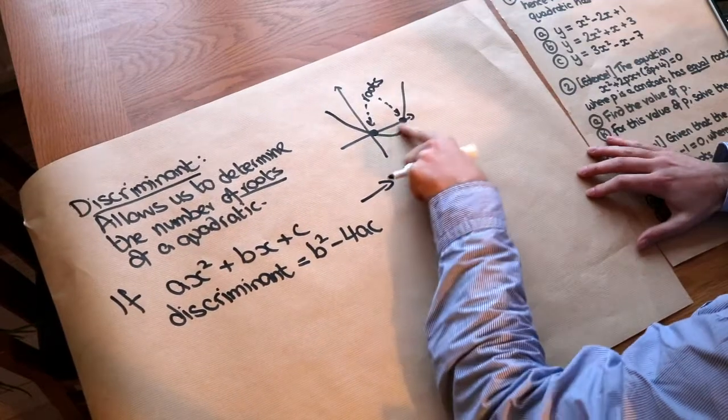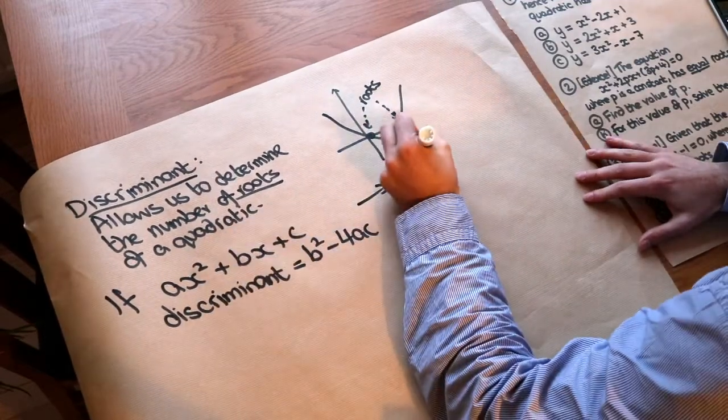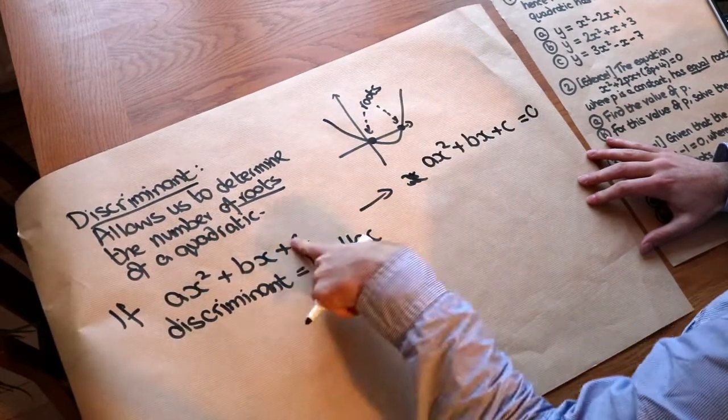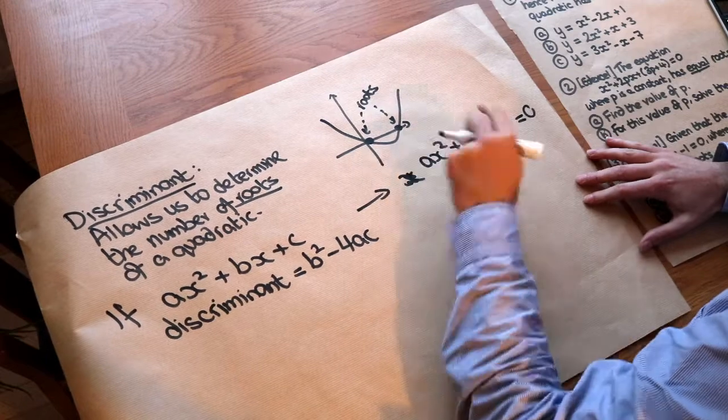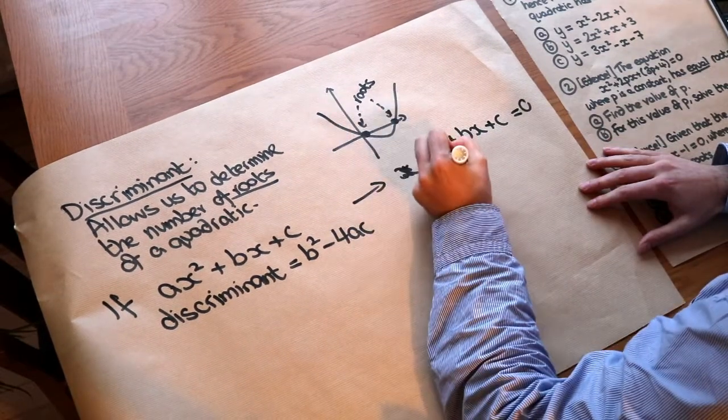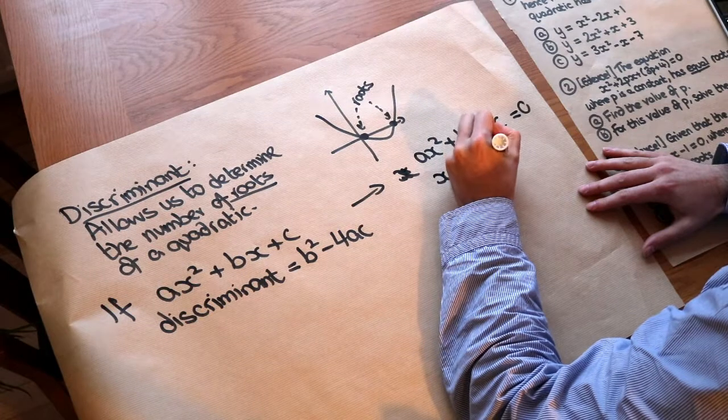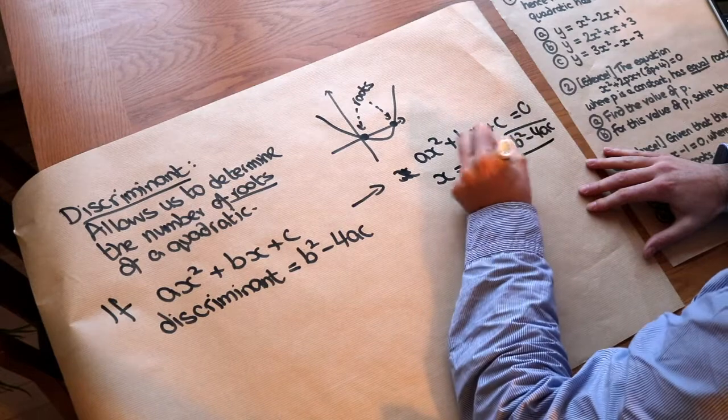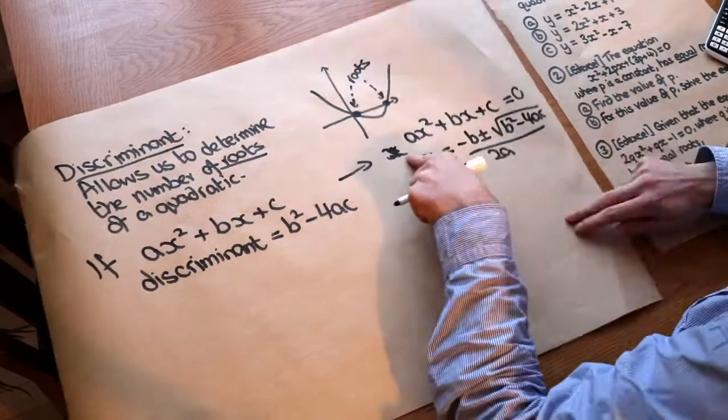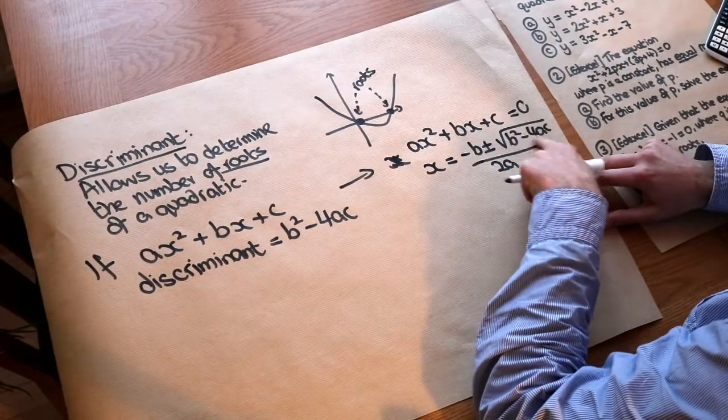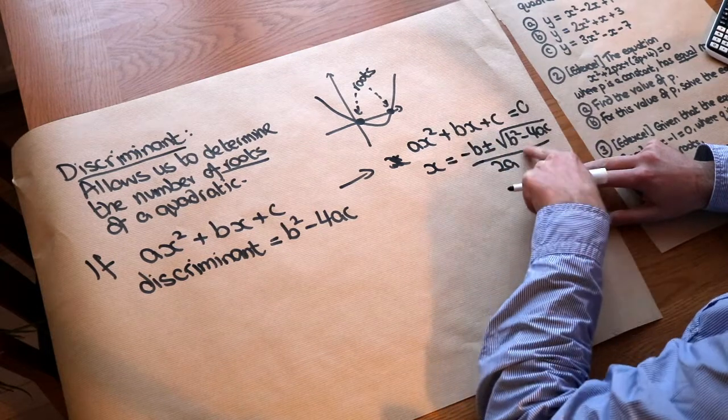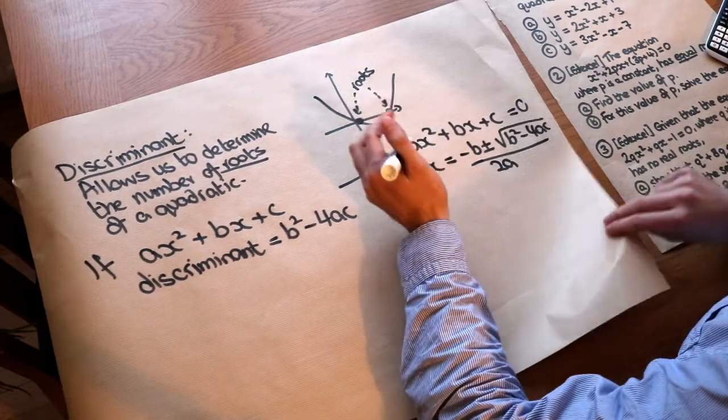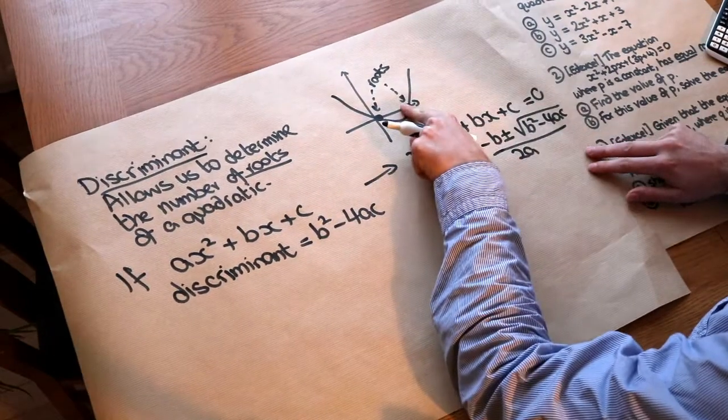Now imagine if we wanted to try and find the roots, we would just set this equal to 0, wouldn't we? Because we're making the y value 0, and then we could use the quadratic formula to find those roots. So we'd use x = (-b ± √(b² - 4ac))/2a. Now can you see that if b² - 4ac was less than 0, you'd have the square root of a negative number, which we can't do with real numbers, and therefore you wouldn't have any solution to this, you wouldn't have any root.